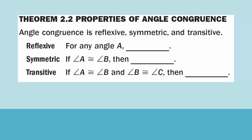Reflexive: for any angle A, angle A is congruent to angle A. What this means is if I have a triangle or any shape that shares the same angle, this angle is the same measure for the yellow triangle as it is for the aqua triangle.